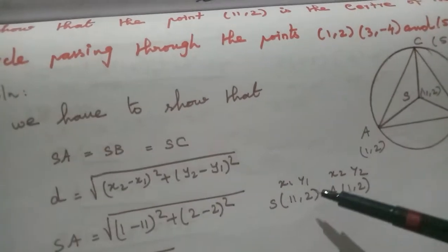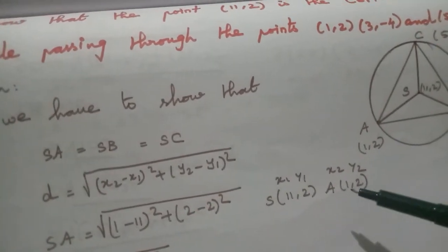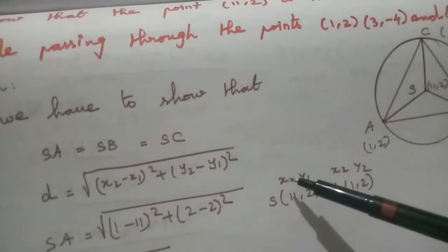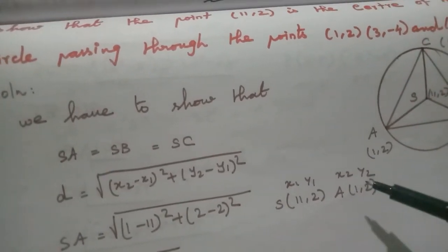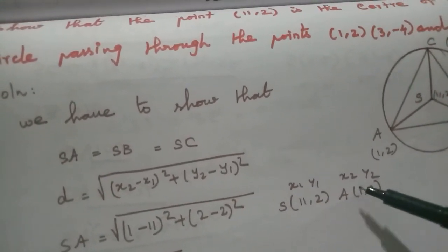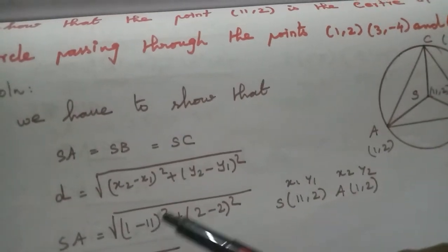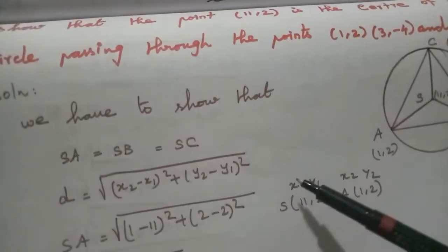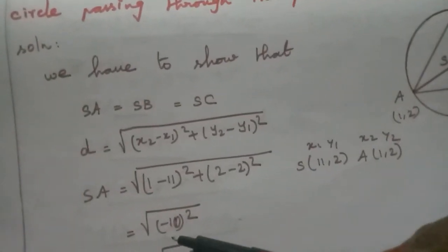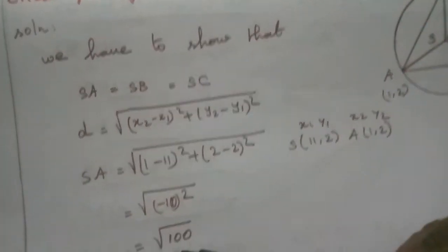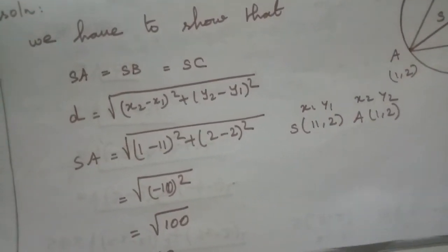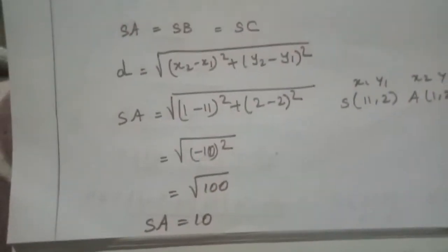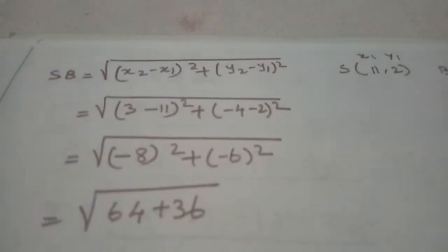Using the formula with S(11,2) and A(1,2) as (x1,y1) and (x2,y2): SA = √[(1-11)² + (2-2)²] = √[(-10)²  + 0] = √100. So SA = 10.